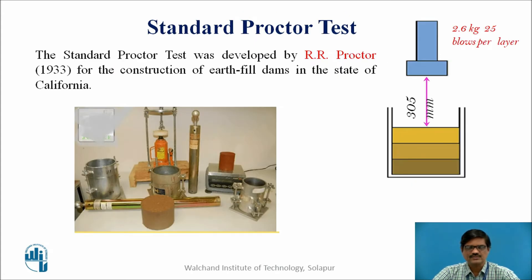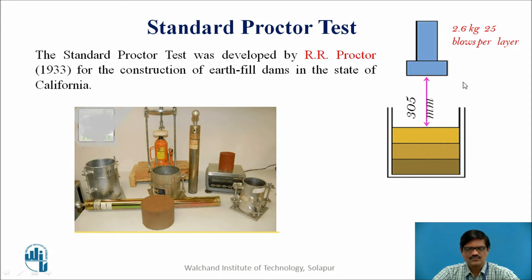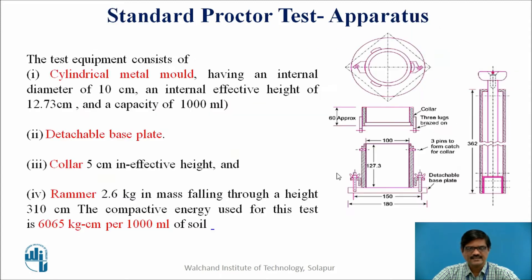For the evaluation of these two properties of the soil, there are certain instruments used which were developed by R. R. Proctor. In the picture, we can see some containers used which are called molds, and a rammer is used for compaction. In the standard proctor test, we are supposed to fill the soil in the mold in three layers. This particular rammer has a specific weight of 2.6 kg and a fall height of 305 mm. We have to give 25 blows for each layer and fill the mold in three layers. We will see the process in detail in the subsequent slide.